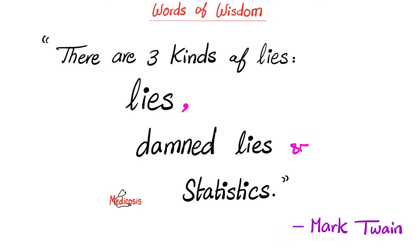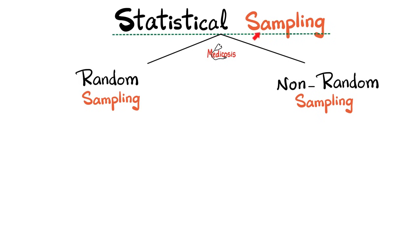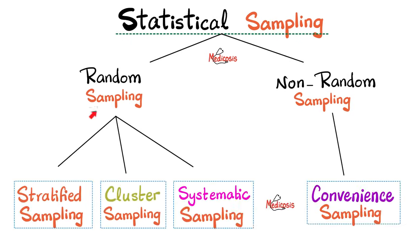There are three kinds of lies, Mark Twain announces: lies, damned lies, and goddamn statistics. Please watch these videos in order. We divide statistical sampling into two types: random sampling and non-random sampling. Methods of random sampling include stratified sampling, cluster sampling, and systematic sampling. For non-random sampling, we have convenience sampling, which should not be done by you if you have an ounce of self-respect.